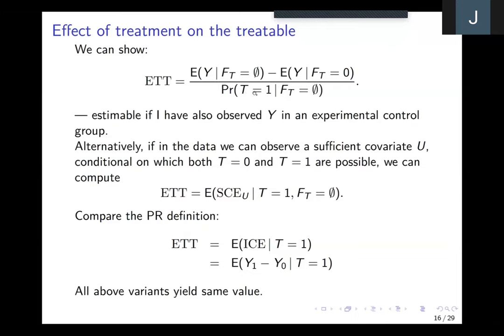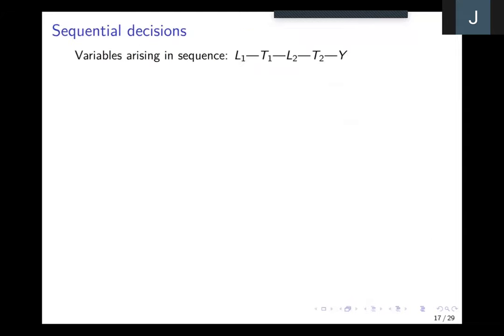Let's go on to another problem. This is a problem which Jamie Robbins did a lot of wonderful foundational work on: sequential decisions. Consider the case where there's a variable L1 which is observed, following which a treatment T1 is applied, then an interim outcome L2, followed by a further treatment T2, followed by a final outcome Y — and each of these can take account of everything that went before.